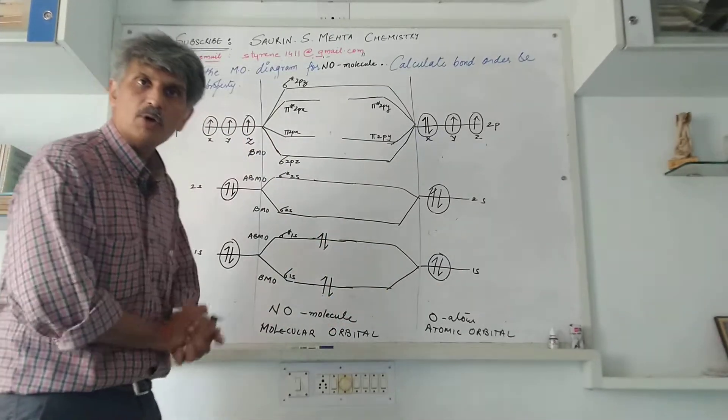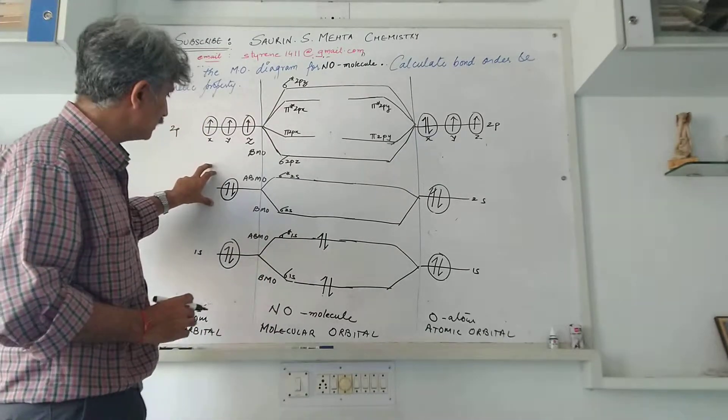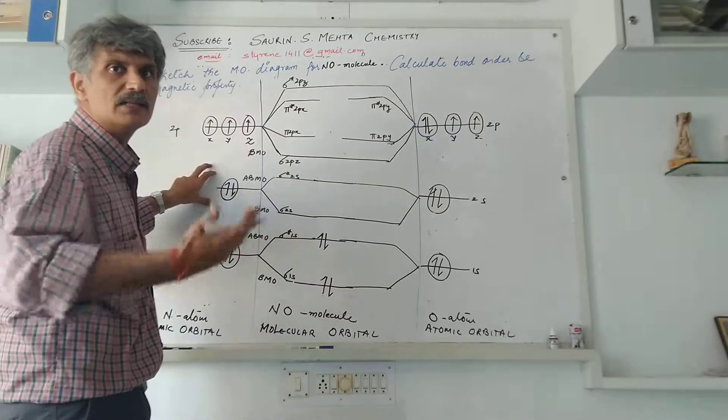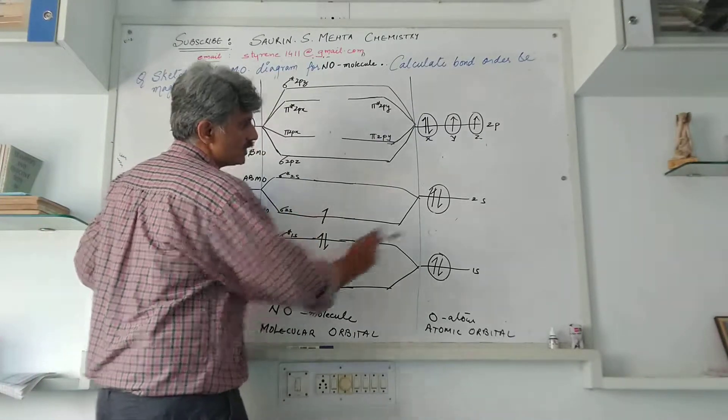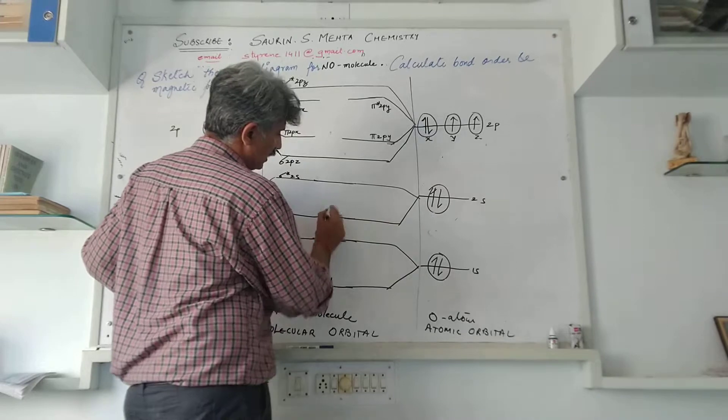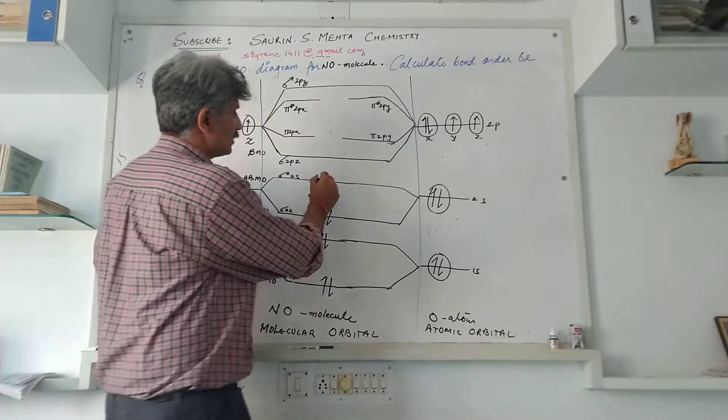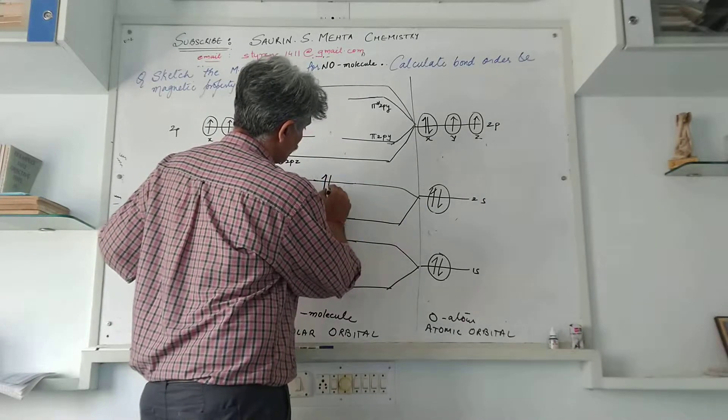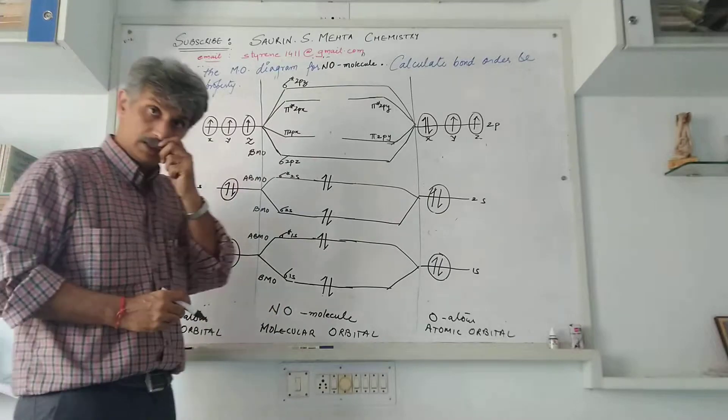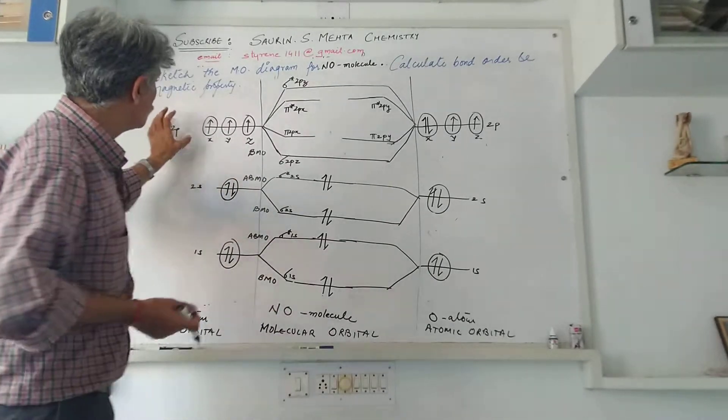Same thing we can do for the 2s orbital. This is what you are repeating the same exercise. One electron gets filled in the sigma 2s from here, the oxygen electron also gets paired. Similarly one electron gets filled in the sigma star 2s, again the oxygen electron also gets paired in the sigma star 2s. So these are the four electrons we have filled accordingly.